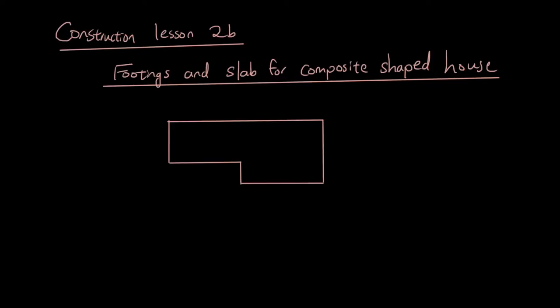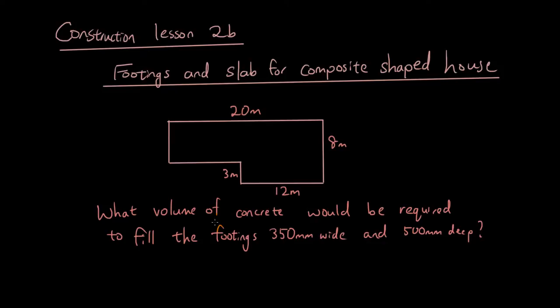So this is a house made up of two rectangles. Okay, so to calculate the volume of concrete for the footings, let me just write the question out. What volume of concrete would be required to fill the footings 350 millimeters wide and 500 millimeters deep for this house?